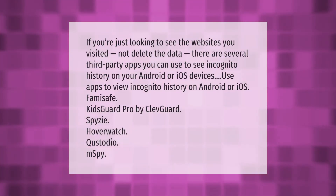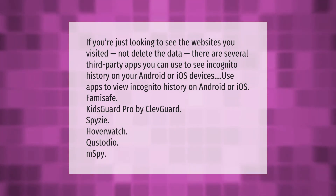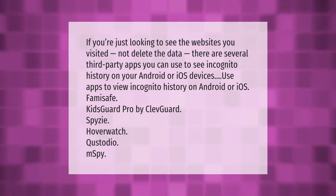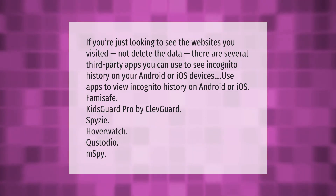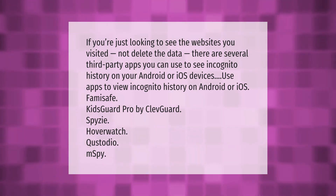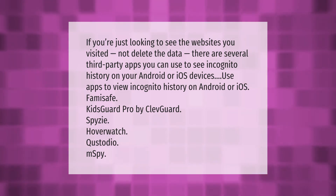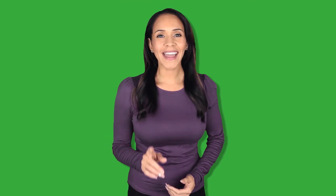If you're just looking to see the websites you visited without deleting the data, there are several third-party apps you can use to see incognito history on your Android or iOS devices. These include FamiSafe, Kids Guard Pro by Clevguard, Spicy, Hoverwatch, Custodio, and mSpy.